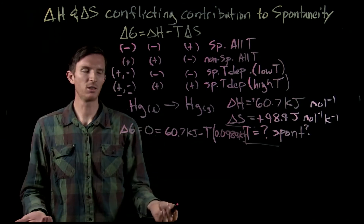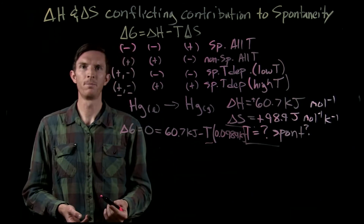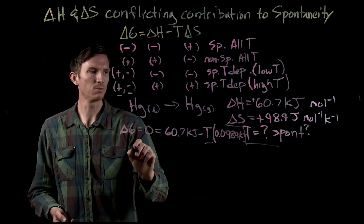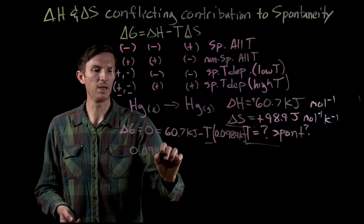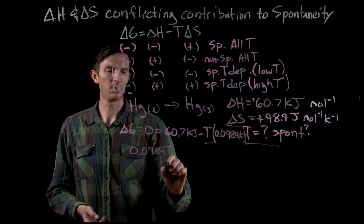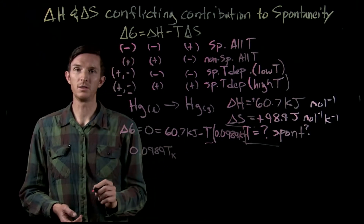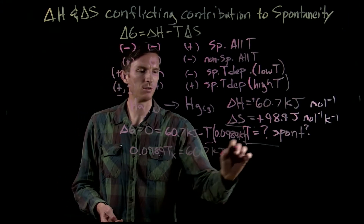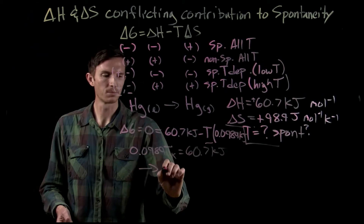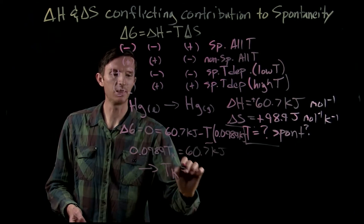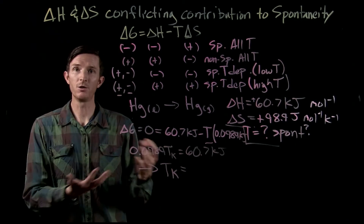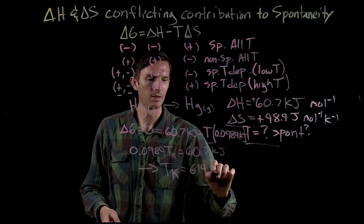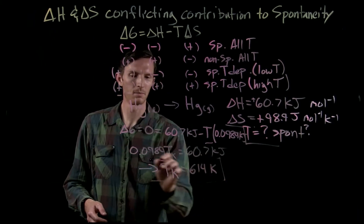Now we have an algebraic expression with only one unknown. We can solve for it: 0.0989 times our temperature equals 60.7 kilojoules. We find that the temperature in Kelvin at which our transition occurs is 614 Kelvin.